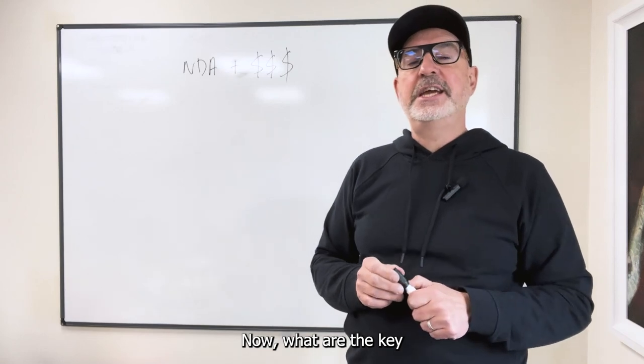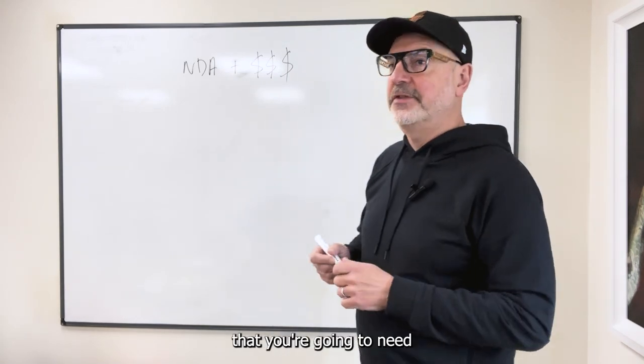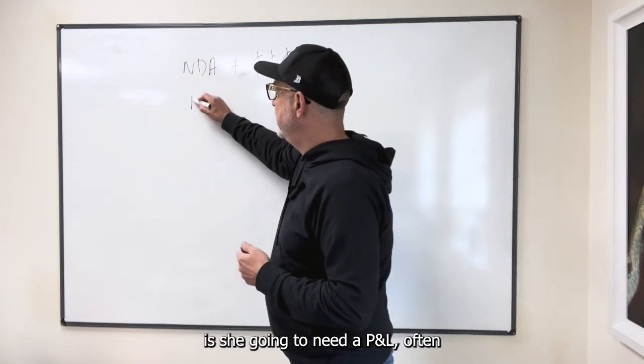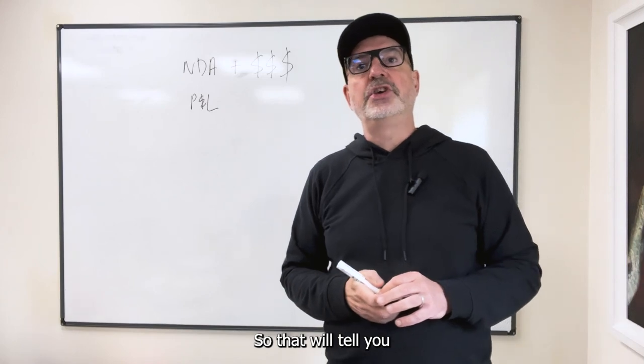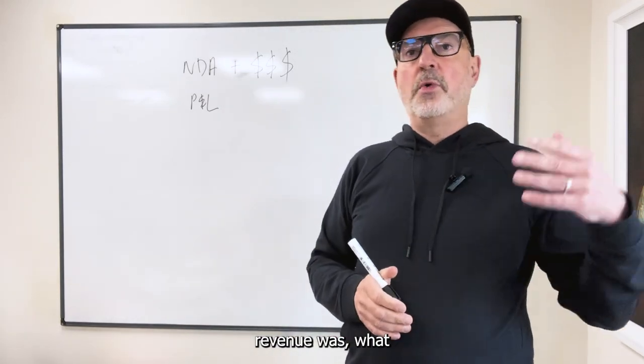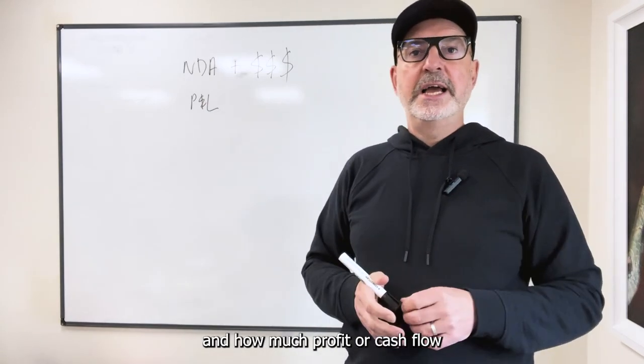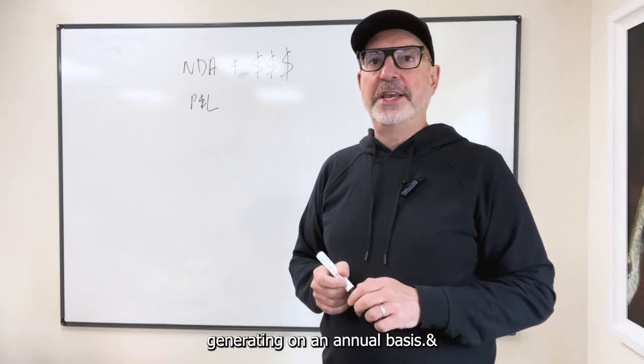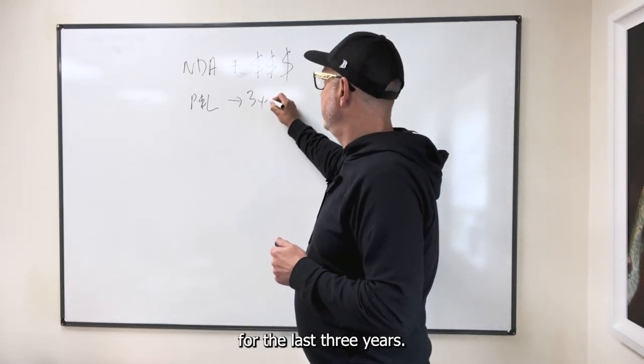Now, what are the key information requirements that you are going to need? So the first thing that you're going to need is a P&L, often called an income statement. That will tell you how profitable the business is, what the revenue was, what the costs and expenses are, the overhead, and how much profit or cash flow the business is generating on an annual basis. And you need that information for the last three years.